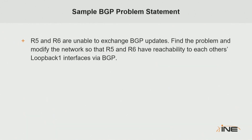For example, a sample BGP problem statement says that router 5 and router 6 are unable to exchange BGP updates — find the problem, and modify the network so that router 5 and router 6 have reachability to each other's loopback 1 interfaces via BGP.